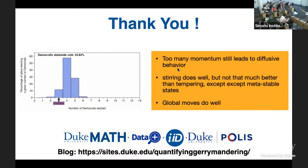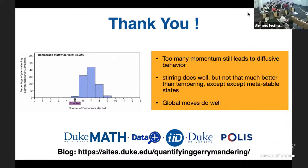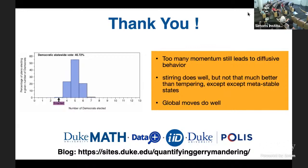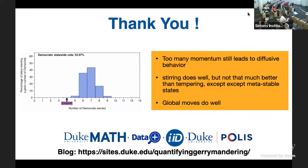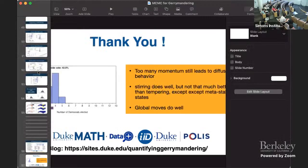Thank you for the great talk. Let's take a few questions. A questioner asks: in your experiments you showed us different maps generated by the algorithms developed by your team — what is the way to assess the goodness of the policy or the maps you generated? There doesn't seem to be any comparison to maps generated by human experts or other workers.